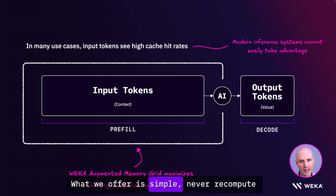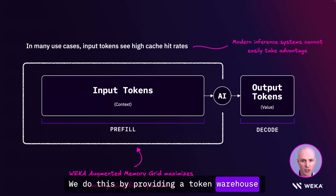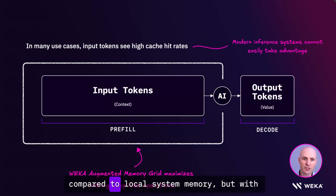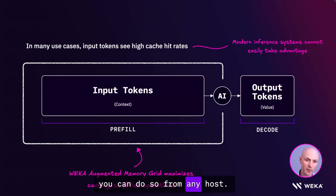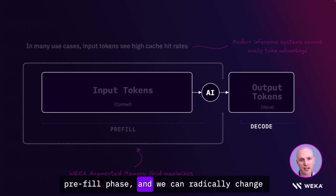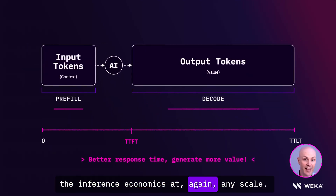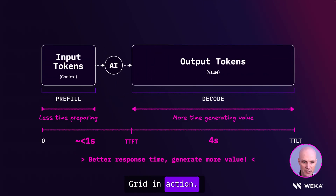What we offer is simple: never recompute tokens unnecessarily again. We do this by providing a token warehouse with a drastically improved capacity density compared to local system memory, but with no performance penalty to access it, and you can do so from any host. By doing this, we can shrink down that pre-fill phase and radically change the inference economics at any scale. But enough talk — let's see Augmented Memory Grid in action.